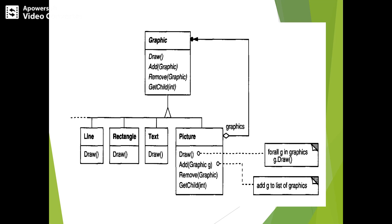The picture class is an aggregation of graphics objects. The picture implements draw by calling draw on its children via get children. Because picture's interface conforms to the graphic interface, picture objects can recursively compose other pictures.